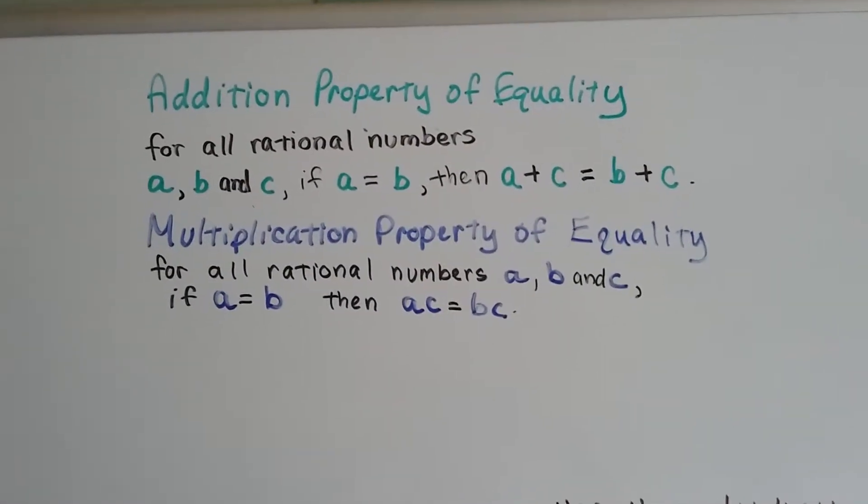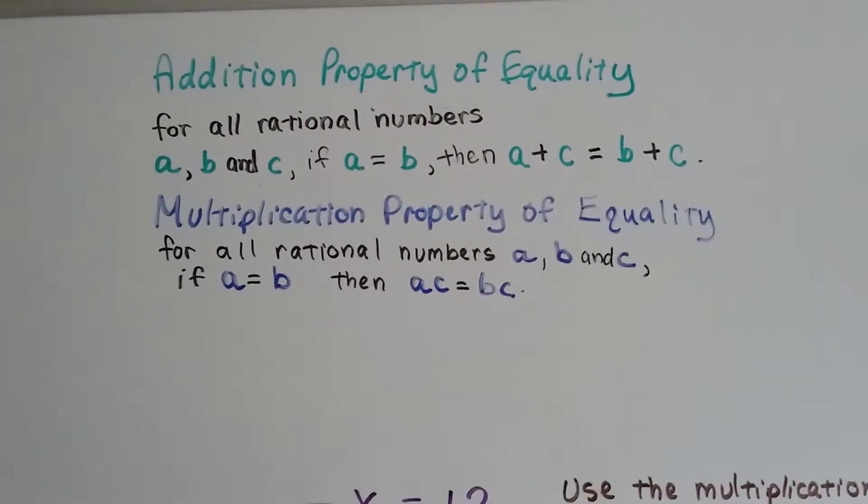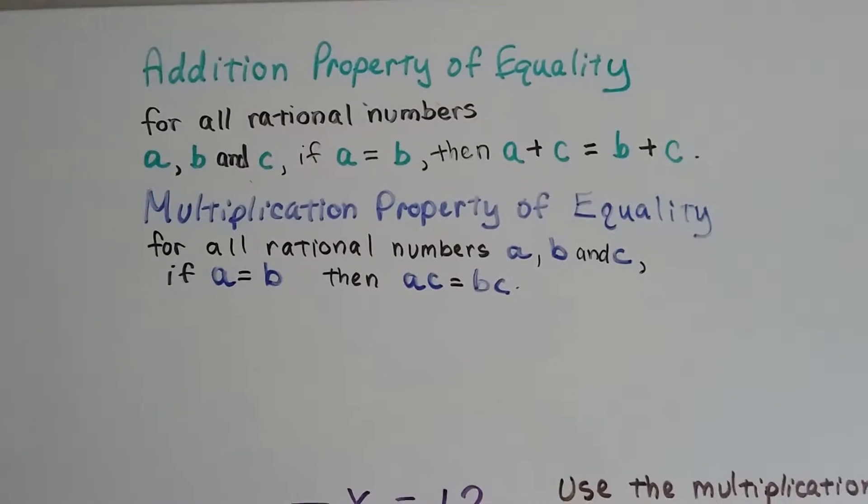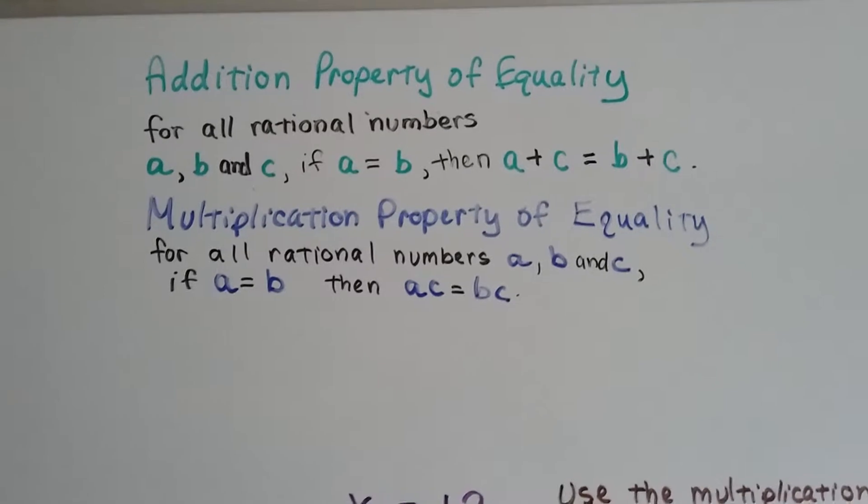The multiplication property of equality tells us for all rational numbers a, b, and c, if a and b are the same, if they're identical, then we can multiply a to c, and it's going to be the same thing as multiplying b to c, because a and b are the same.